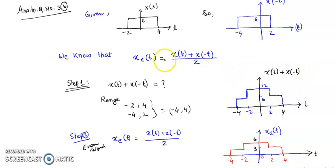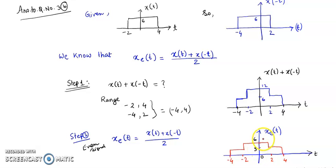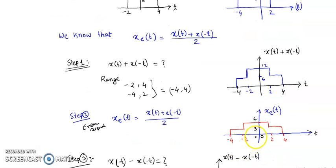To find the even part, we divide the resulting signal by 2. So we simply divide the magnitudes: 12 becomes 6, and 6 becomes 3. The even part x_e(t) has magnitude 6 from minus 2 to 2, and magnitude 3 from 2 to 4 (and minus 4 to minus 2). The time indexes remain the same. This is the even part of the signal.